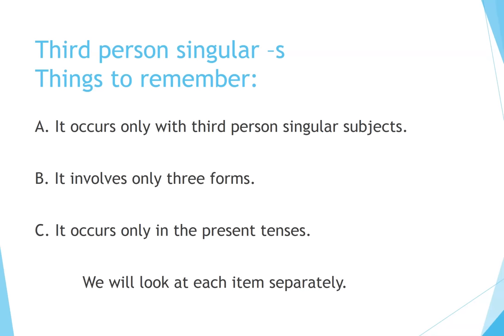Third person singular S — things to remember: A. It occurs only with third person singular subjects. B. It involves only three forms. C. It occurs only in the present tenses. We will look at each item separately.